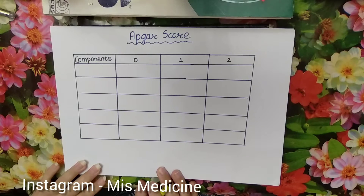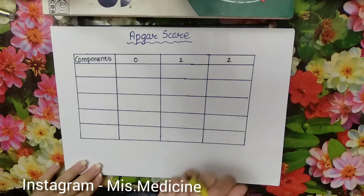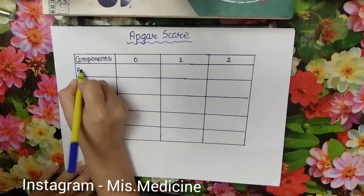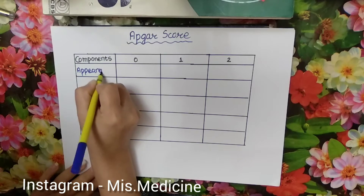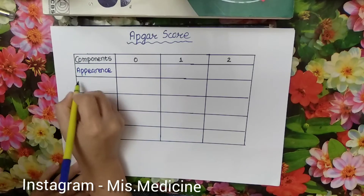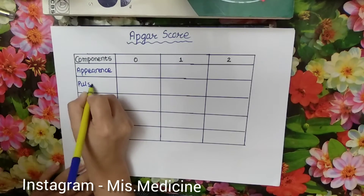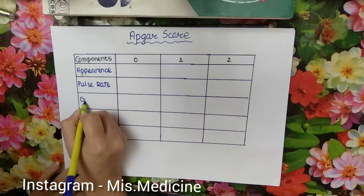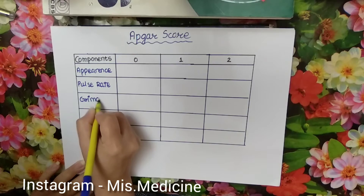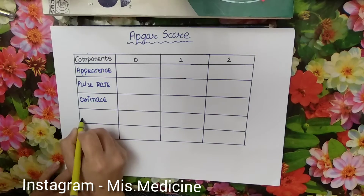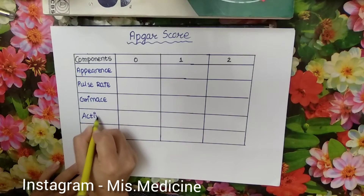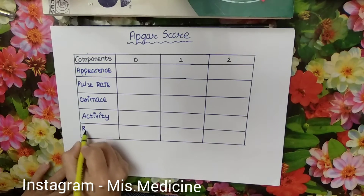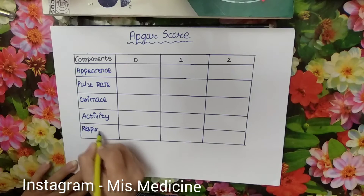APGAR score contains 5 components: A for appearance, P for pulse rate, G for grimace, A for activity, and R for respiratory effort — not respiratory rate, remember that.